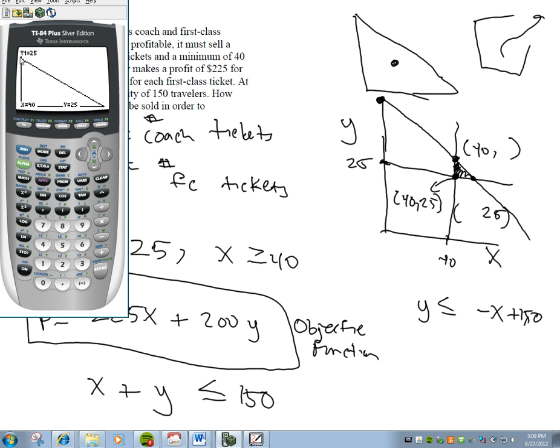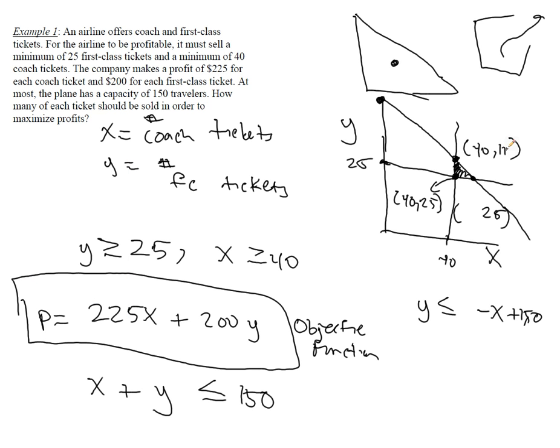Oh, I think I'm on the wrong graph. Right now I'm on the line y equals 25. So when x equals 40, of course y equals 25, but if I hit up, it'll jump, you can kind of see the point up here to y equals negative x plus 150, and it gives me the point 40, 110. So this is the point 40, 110.